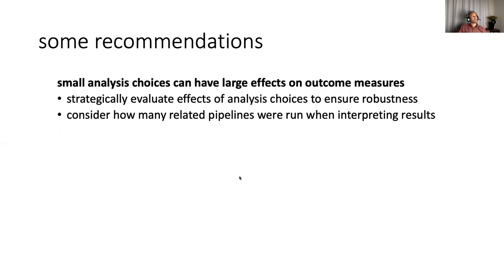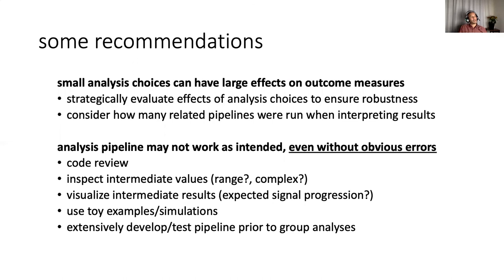All right, just some small recommendations. To the issue where you have small analysis choices that can have large effects on your outcome measures, try to strategically evaluate the effects of analysis choices to ensure robustness and consider how many related pipelines were run when you're interpreting your results. On the other hand, another big issue is that your analysis pipeline may not work as intended even without obvious errors. And I'm underlining that last bit because when there's errors of course we're going to try to figure out what the reason for that is, but even if you don't see obvious errors there might still be some.